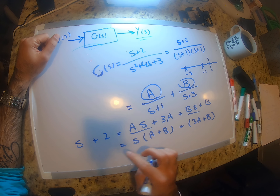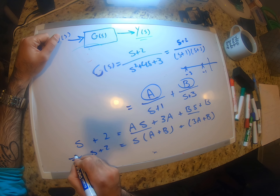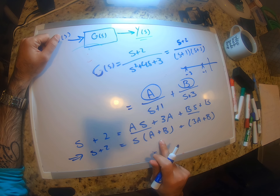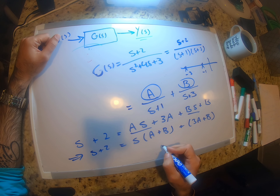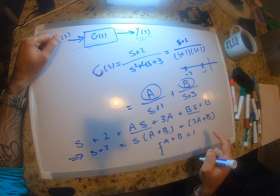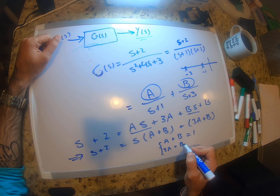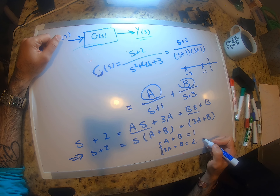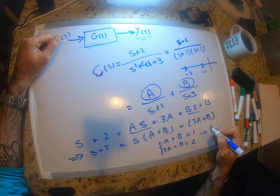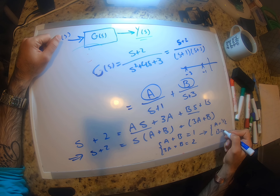Since the two expressions are equivalent, the coefficients must match. So A + B = 1 and 3A + B = 2. Solving this system gives us A = 1/2 and B = 1/2.